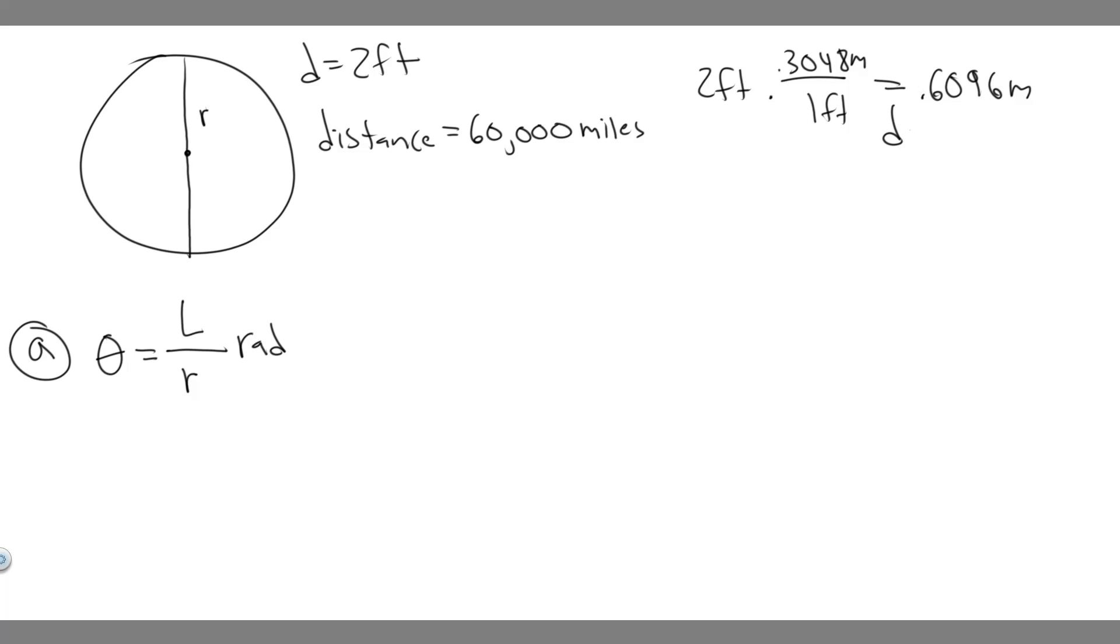So 0.6096 meters, this is your diameter. But we need the radius, and the radius is just half the diameter. Because this whole thing is the diameter, and we need half of it for the radius, so you want to divide it by 2. So if you divide it by 2, we'll get 0.3048 meters, that's going to be the radius.